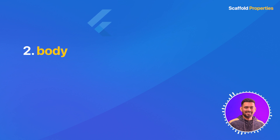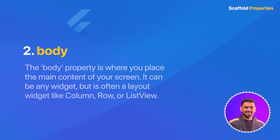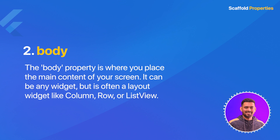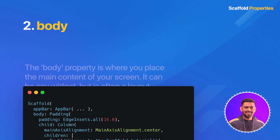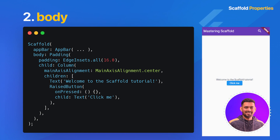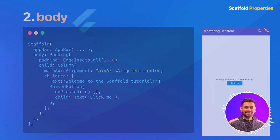Number two: body. The body property is where you place the main content of your screen. It can be any widget, but it is often a layout widget like Column, Row, or ListView. Here, we have added padding around the body content and created a column with a text widget and a raised button.